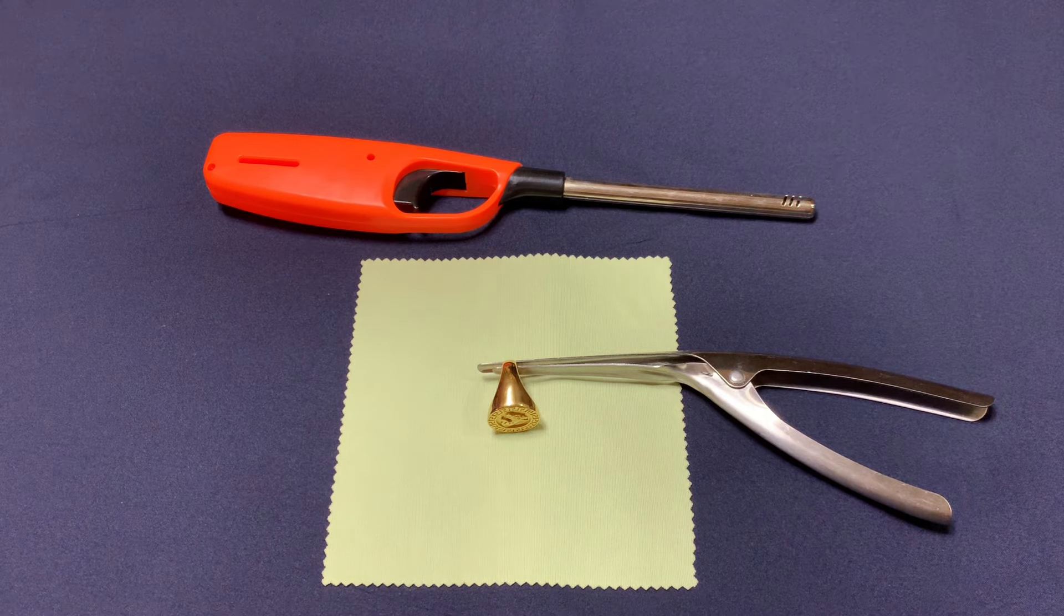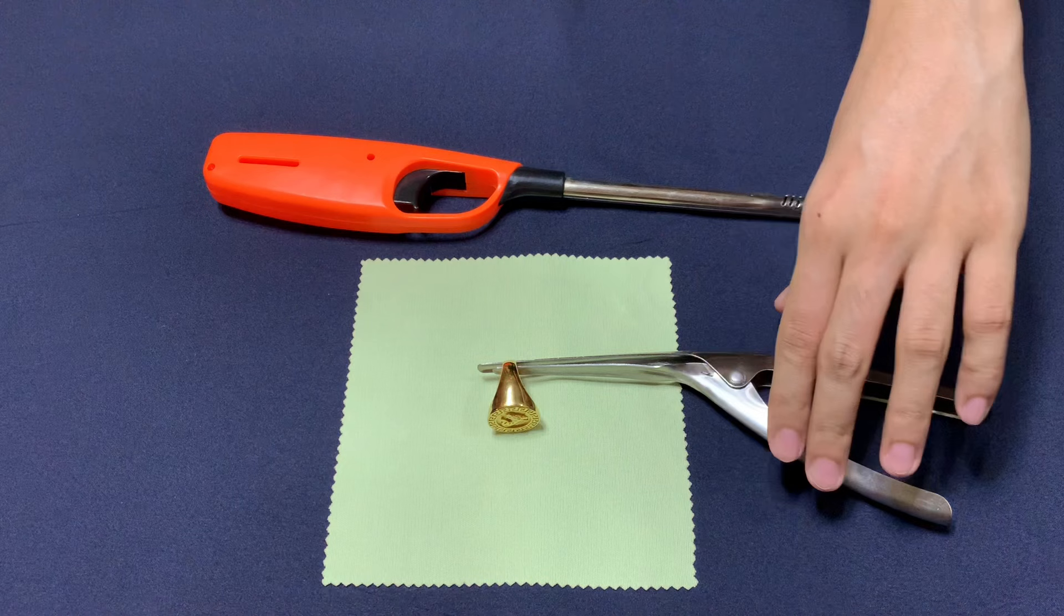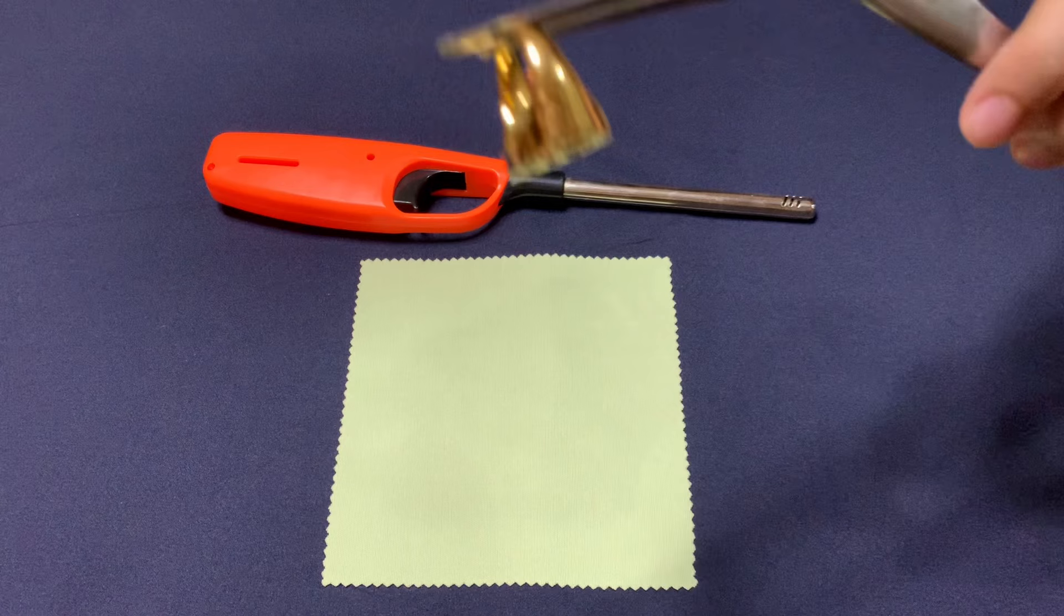Exposure to direct heat can help reveal whether gold jewelry is gold-plated. First, hold your gold using a pair of pliers or tongs for safety. Make sure it's completely clean.